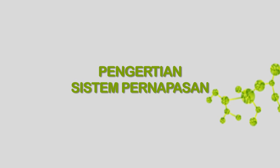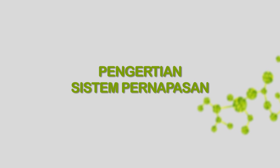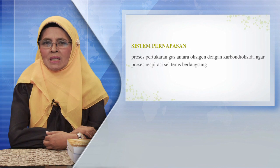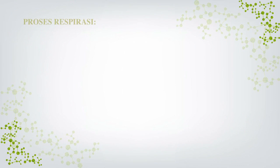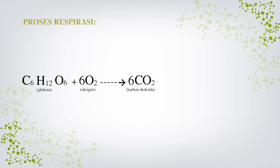Materi pertama adalah pengertian sistem pernapasan. Apa yang dimaksud dengan sistem pernapasan? Pernapasan adalah suatu proses pertukaran gas antara oksigen dengan karbon dioksida agar proses respirasi seterusnya berlangsung. Proses pernapasan dibutuhkan oksigen untuk memecah atau mengoksidasi glukosa, kemudian dihasilkan karbon dioksida, air, dan sejumlah energi. Proses respirasi adalah C6H12O6 ditambah 6O2 menghasilkan 6CO2 dan 6H2O plus energi.